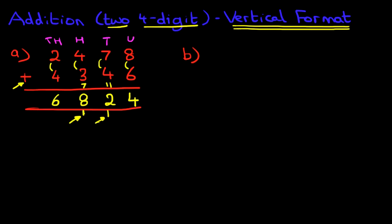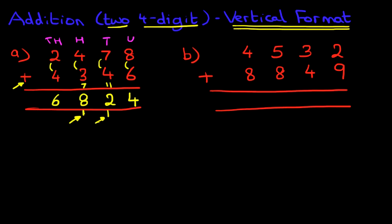I'm just going to write this down a bit further to the right. I've got 4, 5, 3, 2 plus 8, 8, 4, 9. So now we really have got very big numbers. So let's read this out. We've got 4,532 plus 8,849.